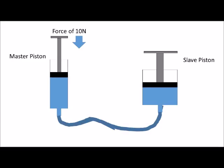In this example we have a force of 10 newtons applied to the master piston. Because the area of the plunger in the master piston is 10 cm², the pressure inside the piston is 1 newton per cm².